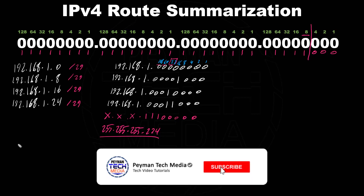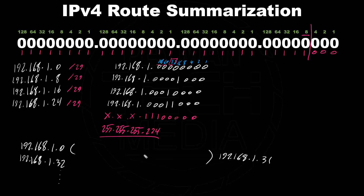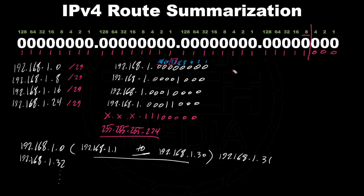A block of 32 covers all these addresses. Writing it out: the zero network is 192.168.1.0, incrementing by 32 gives 192.168.1.32 as the next subnet. The broadcast of the first subnet is 192.168.1.31, and the range 192.168.1.0 through 192.168.1.30 covers 1.0, 1.8, 1.16, and 1.24. In the routing table, we add 192.168.1.0 with a subnet mask of 255.255.255.224.